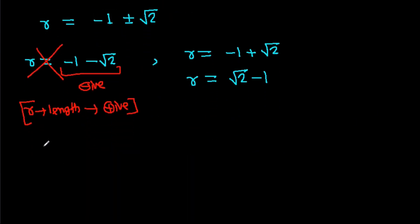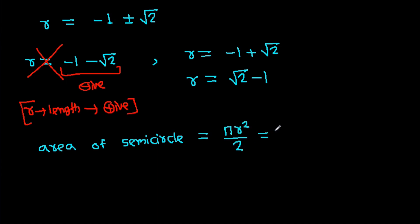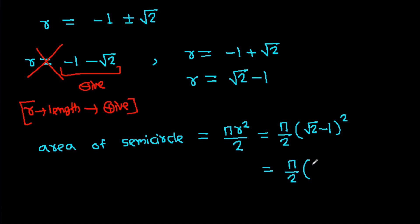Now we can find the area of the semicircle: pi r squared over 2 equals pi over 2 times (root 2 minus 1) squared, which equals pi over 2 times (3 minus 2 root 2).